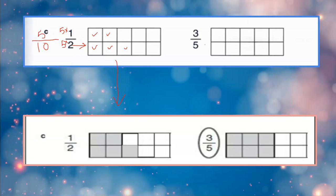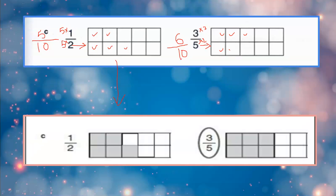Now what about 3 upon 5? Look — the second grid also has 10 boxes, not 5. So I need to convert 3 upon 5 as well. Multiplying the denominator by 2 gives 10, so I apply the same to the numerator: 3 becomes 6. How many boxes to color? 6 boxes: 1, 2, 3, 4, 5, 6. Now this part is done and just the comparison is left.